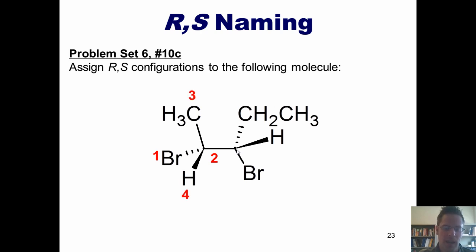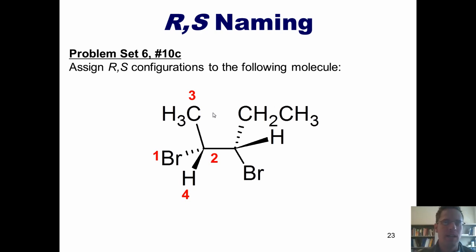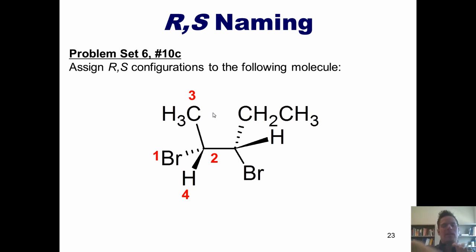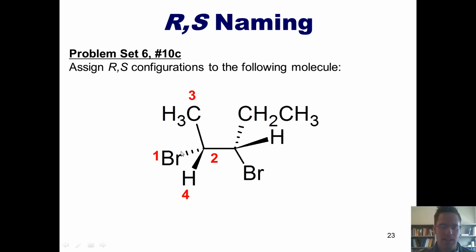The hydrogen is of course the loser at four. Now if I were to draw a circle going from one to two to three, it would look counterclockwise. Keeping in mind that this hydrogen as drawn is pointing three-dimensionally towards me, I have to imagine what I would see if I were on the opposite side of the molecule with the hydrogen pointing away from me. Going from one to two to three, that would be clockwise, and clockwise is indeed R.